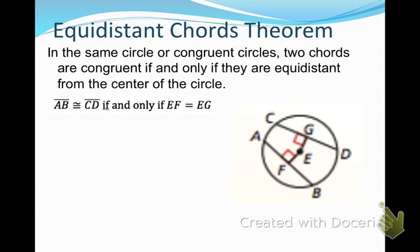The last property is: in the same circle or congruent circles — again, that's very important — two chords are congruent if and only if they are equidistant, meaning the same distance from the center of the circle. So if you look at our diagram, chord AB is congruent to chord CD if and only if EF equals EG.